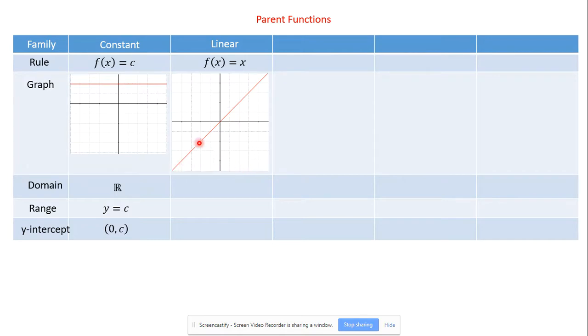The domain, well, x, we can put anything we want in there, so the domain, all real numbers. The range, we're going to get out anything we want, all real numbers. The y-intercept is 0. It's at the origin, (0, 0). Remember, the y-intercept is always going to be 0 comma something.